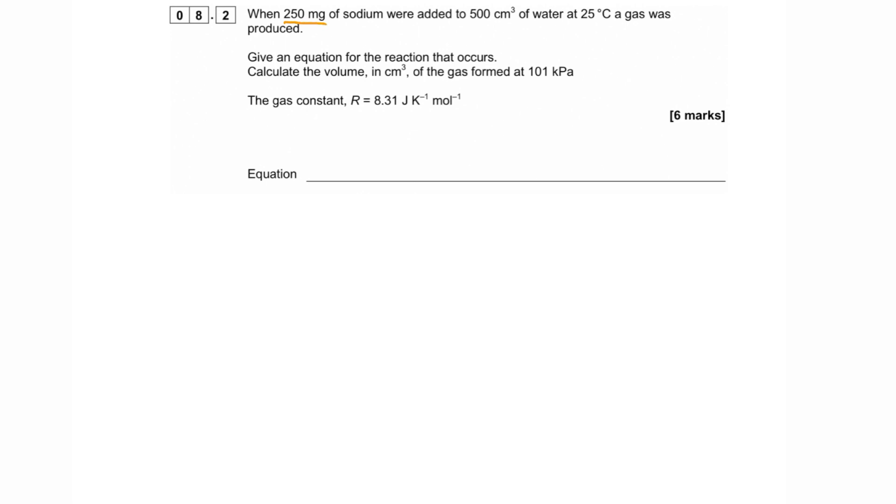Now we're going to combine this unit conversion knowledge, the knowledge of the equation itself PV equals NRT, with what we learned last lesson and run through a typical example of an exam question. In the exam question we've got here, we're told we've got 250 milligrams of sodium being added to 500 centimeters cubed of water at 25 degrees Celsius. It says a gas was produced. Give an equation for the reaction that occurs and calculate the volume in centimeters cubed of the gas formed at 101 kilopascals. And then it tells us the gas constant R.